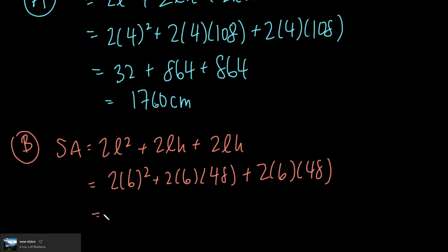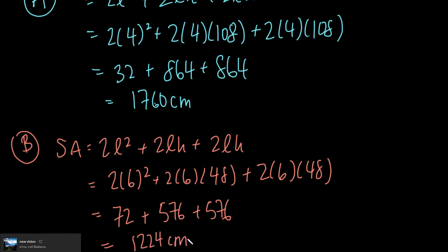That's going to equal 6² is 36 times 2 is 72 plus 2 times 6 is 12 times 48, which is 576 plus 576. I add all those up: 72 plus 576 plus 576 gives me 1224 centimeters. That's for option B.